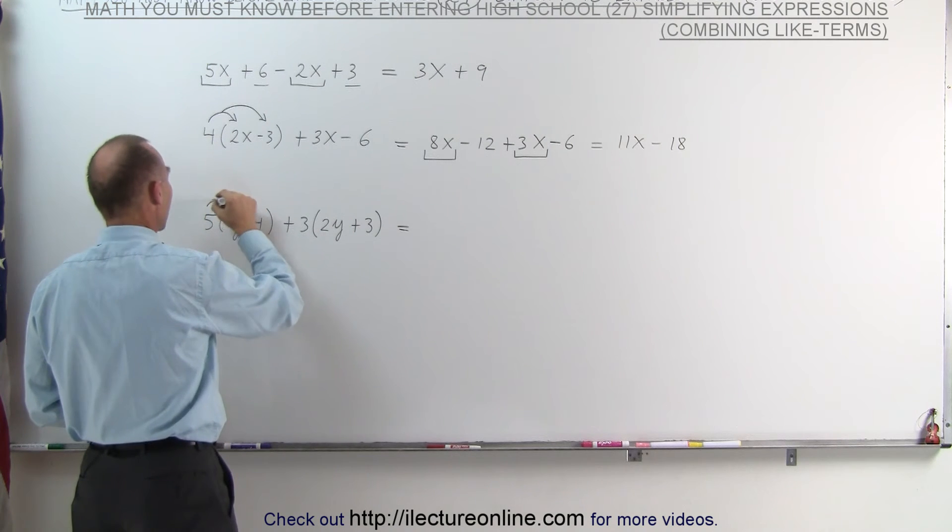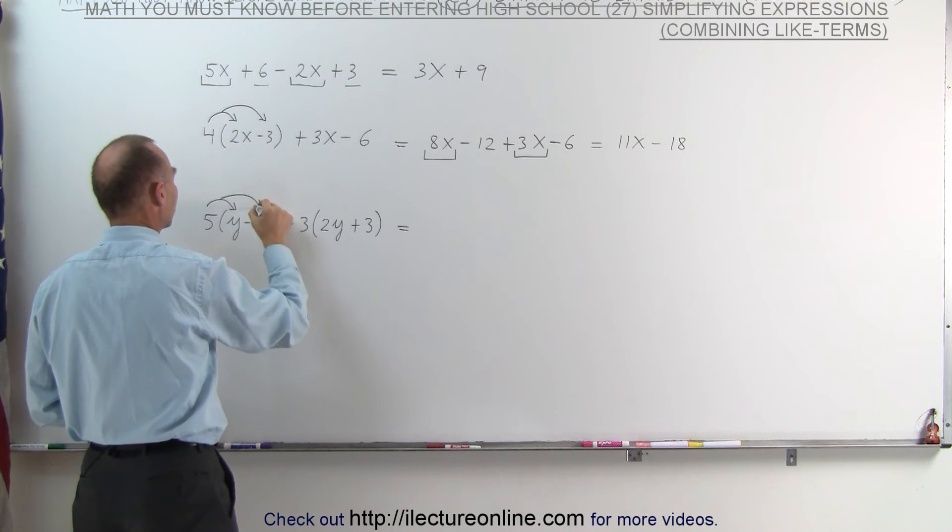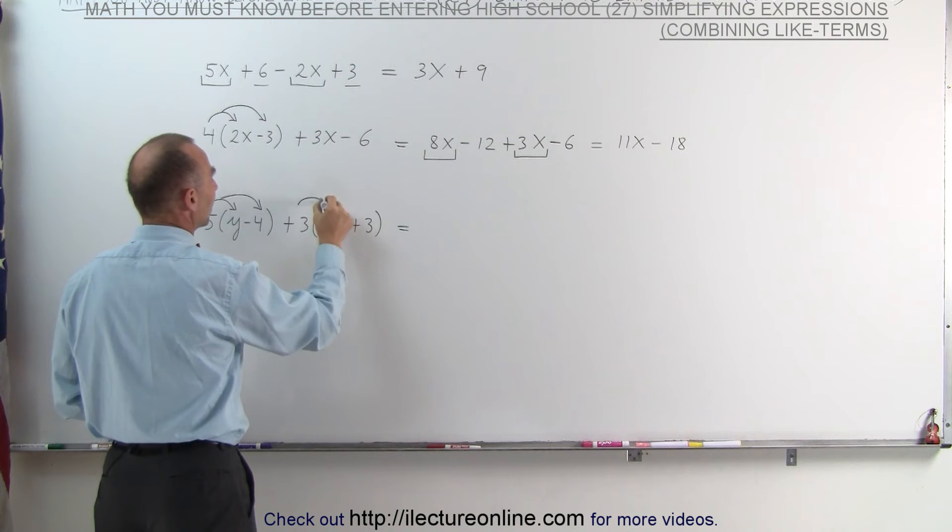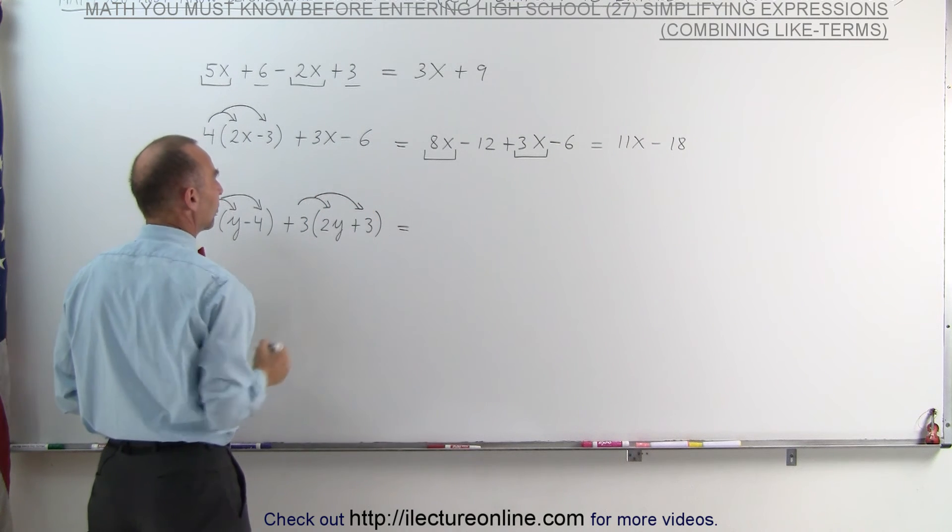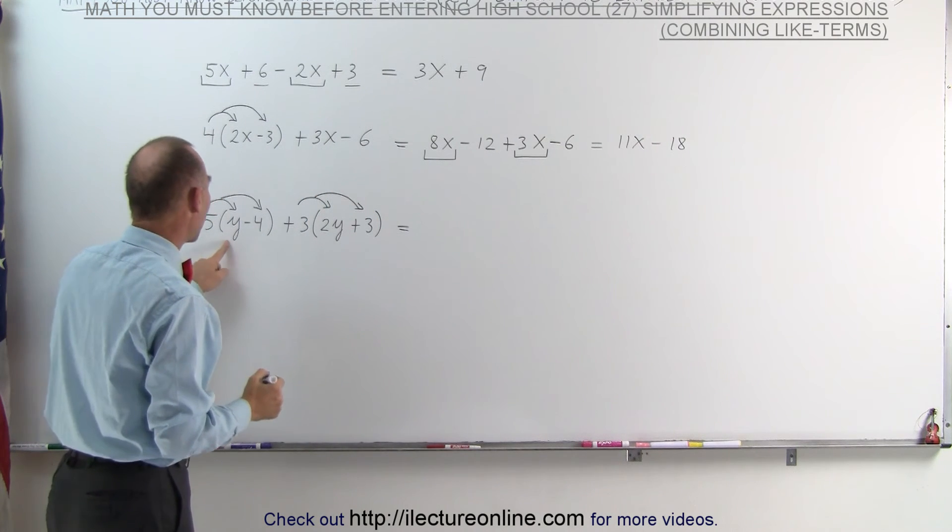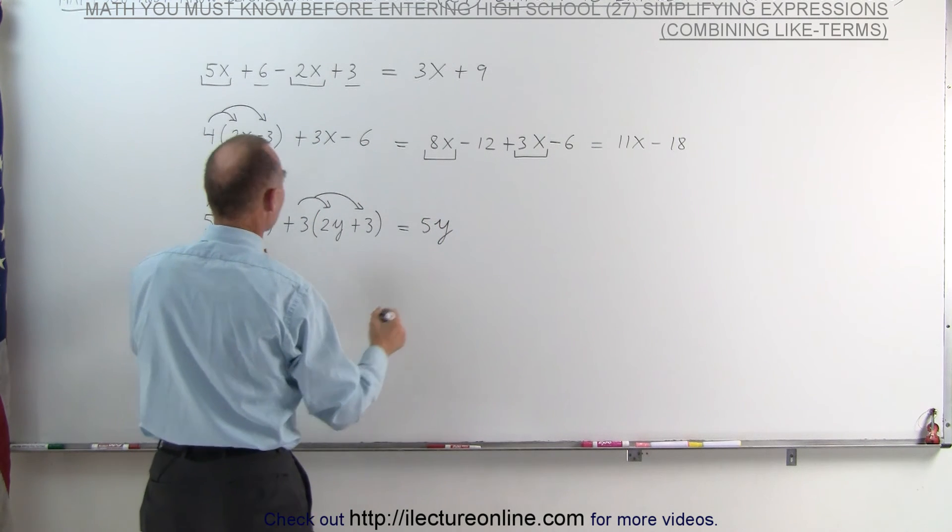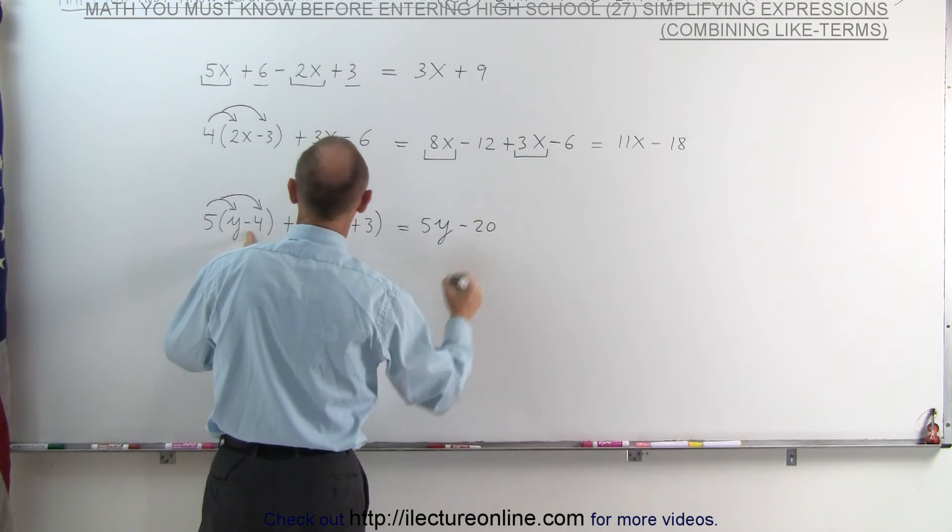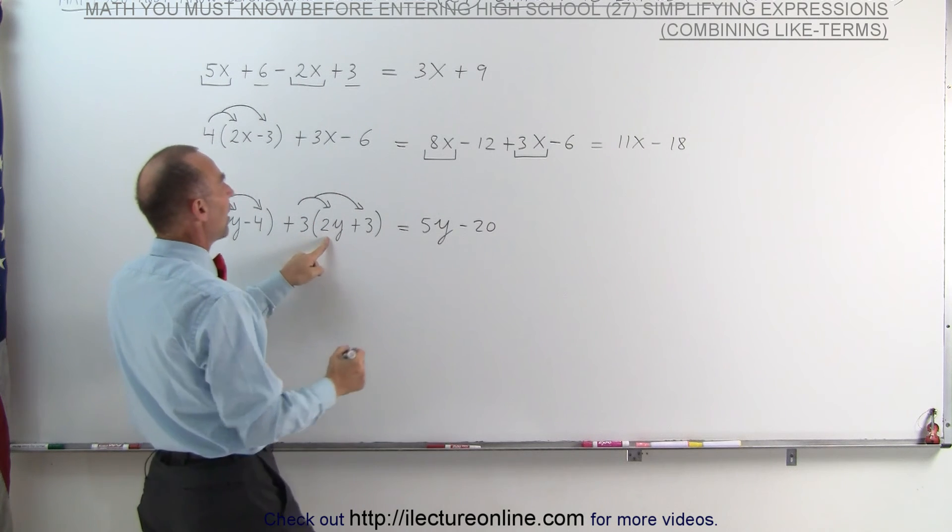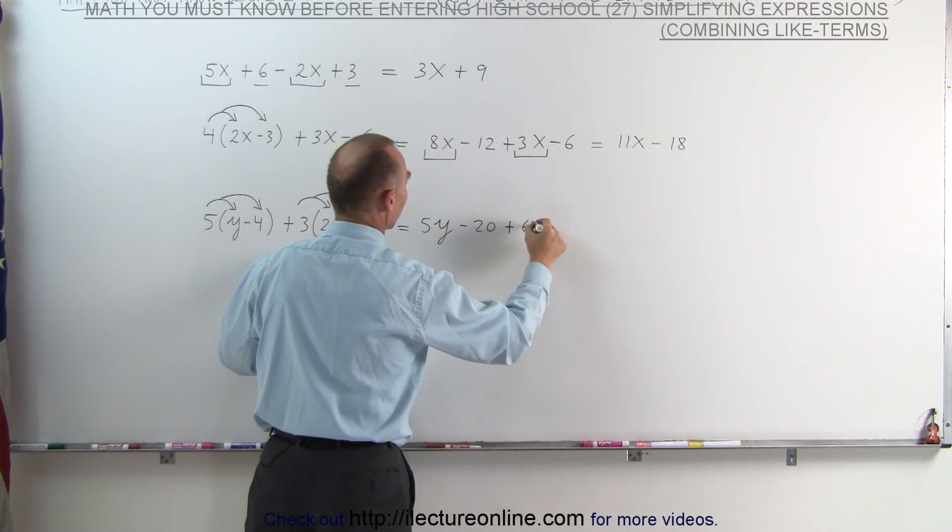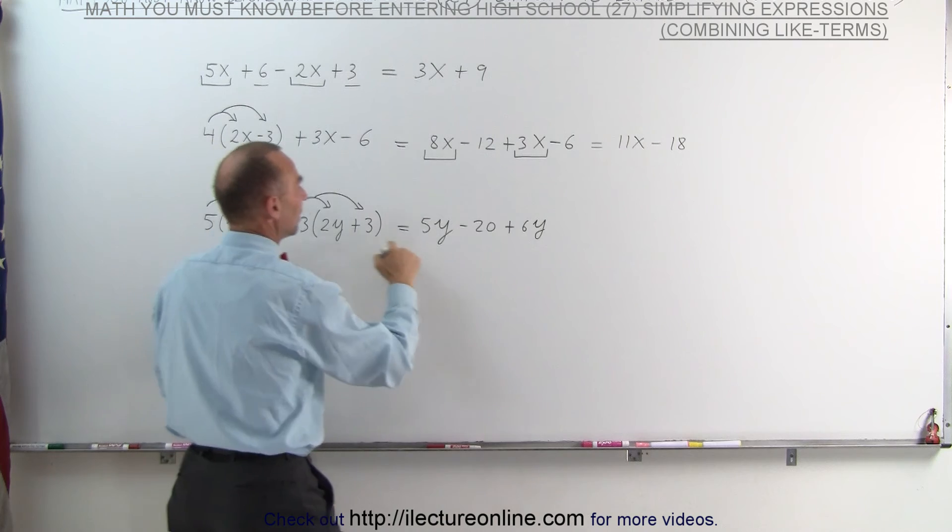Again, we're going to distribute the 5 on the first term and the second term in the parentheses, and the 3 on the first term and the second term in the parentheses. 5 times y is 5y, 5 times negative 4 is negative 20, 3 times 2y is 6y, and 3 times 3 is 9.